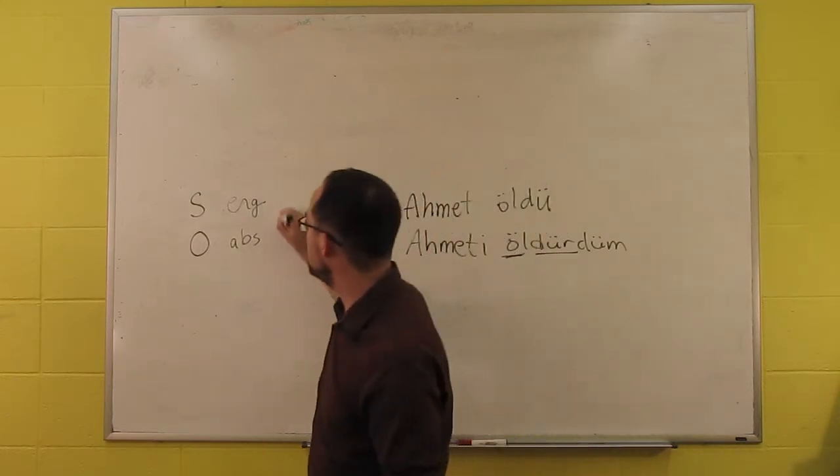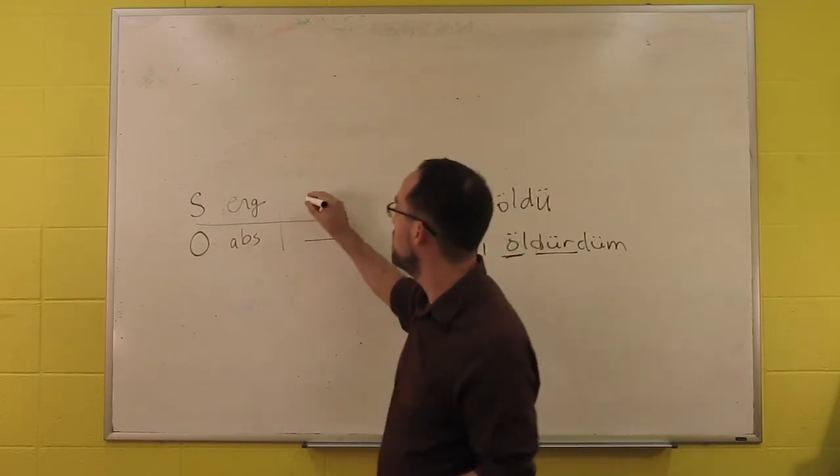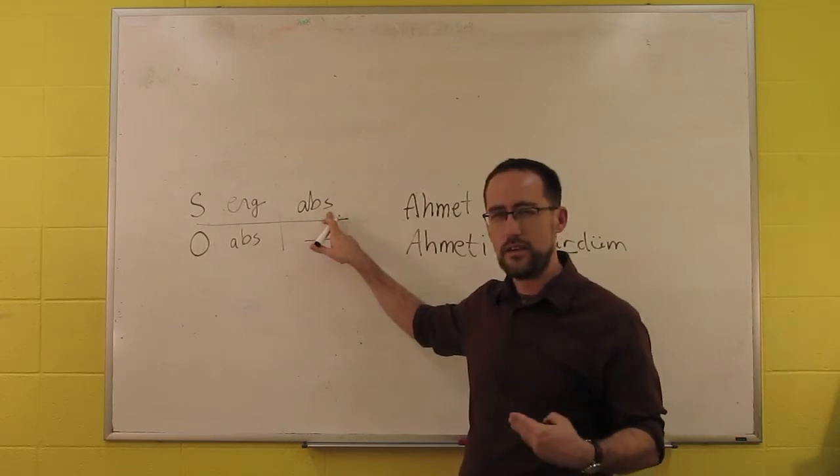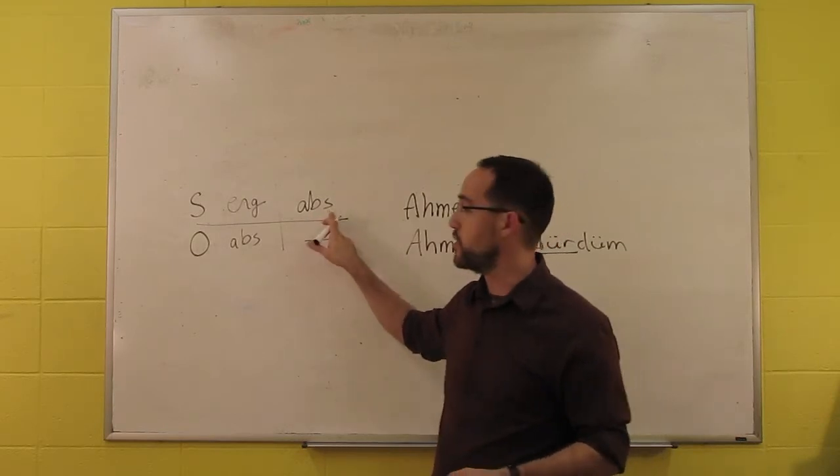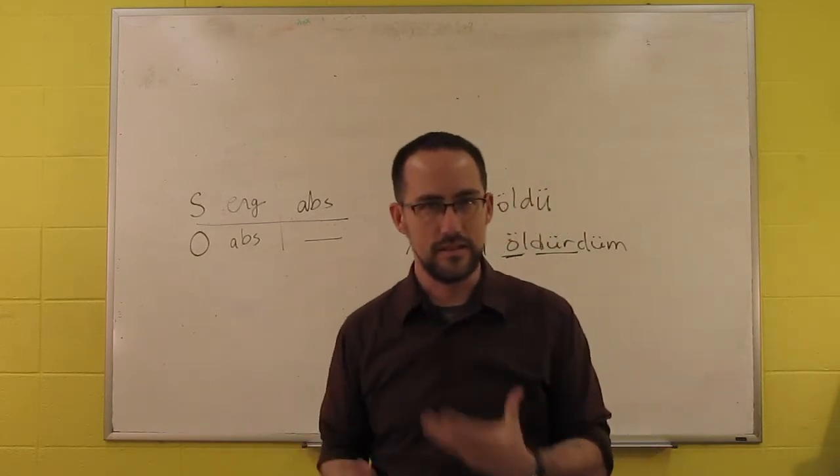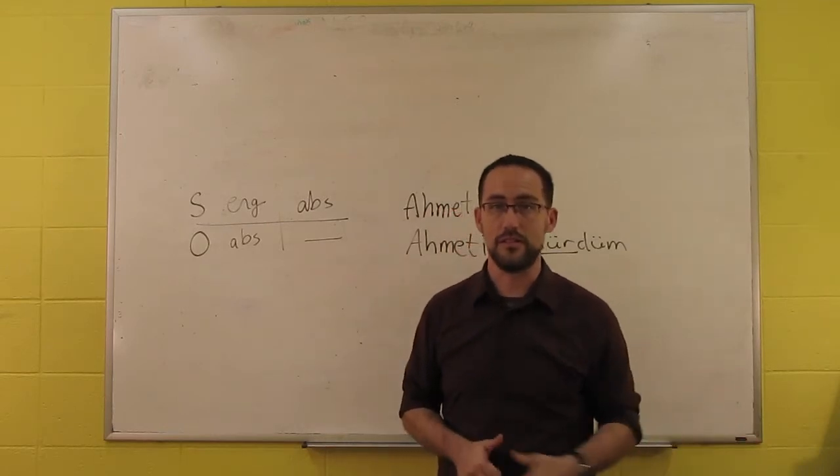But if there's just a subject and no object, so the intransitive, then the single noun is marked with the absolutive, the same as the object case. So there's a distinction there that we don't get in what are called nominative accusative languages.